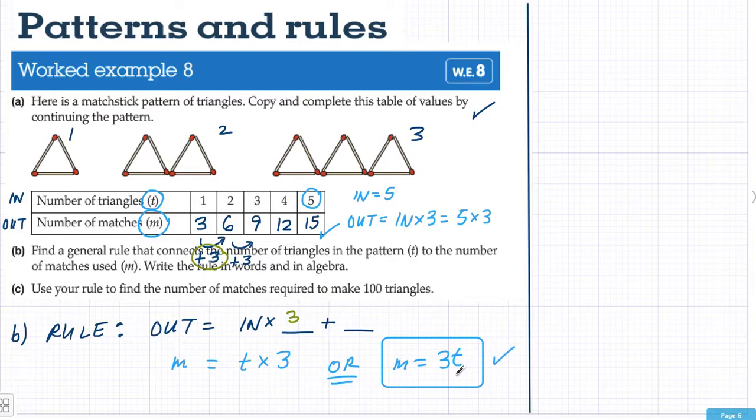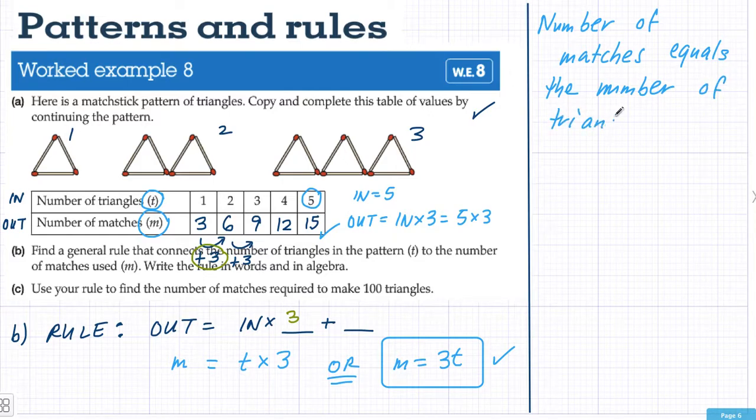We've written the rule in algebra. The other way we could write the rule is in words. We could say the number of matches equals the number of triangles multiplied by three. So the number of triangles multiplied by three gives you the number of matches. And that makes sense because each triangle has three little matches in it.